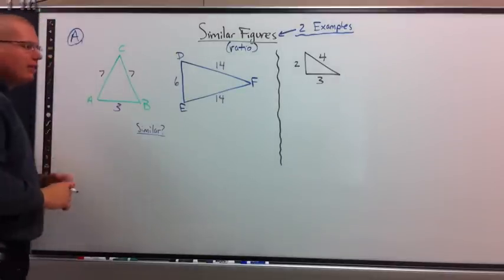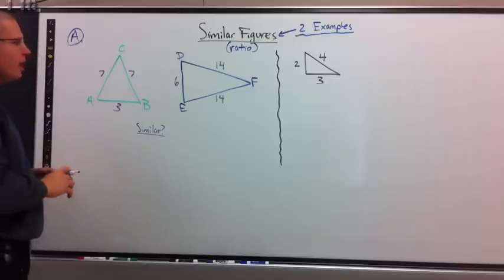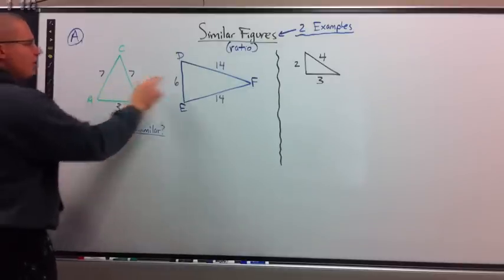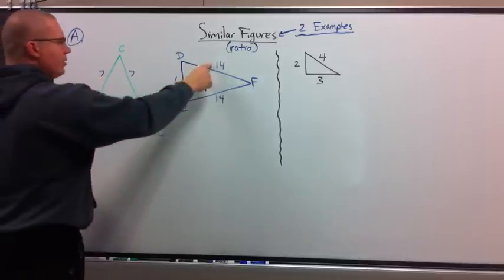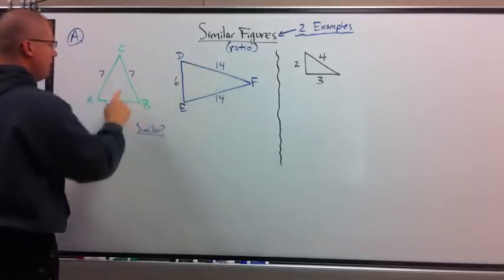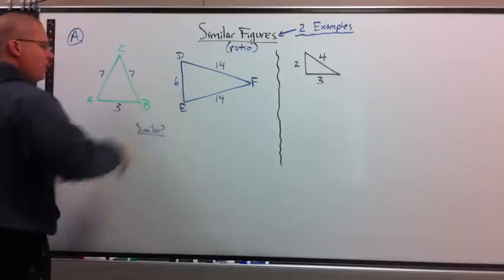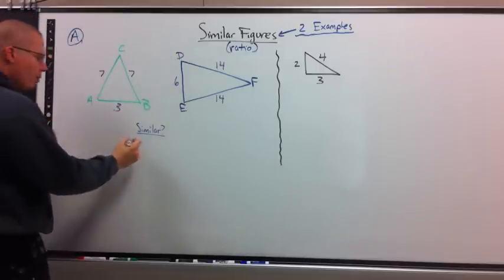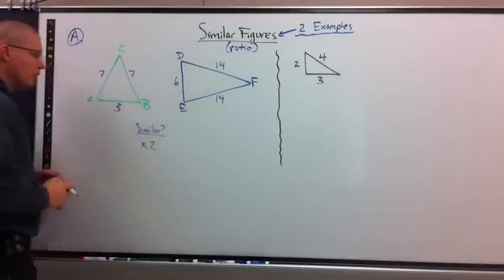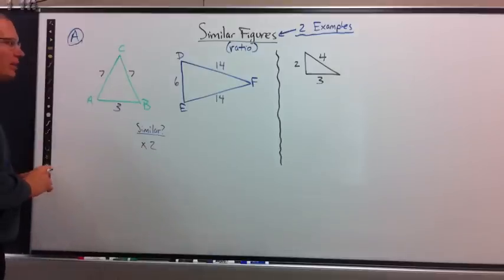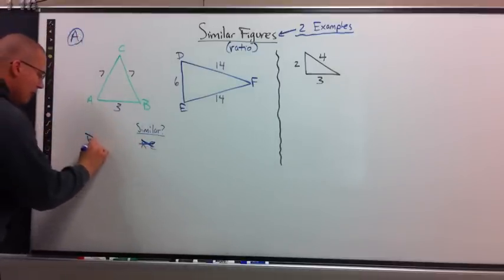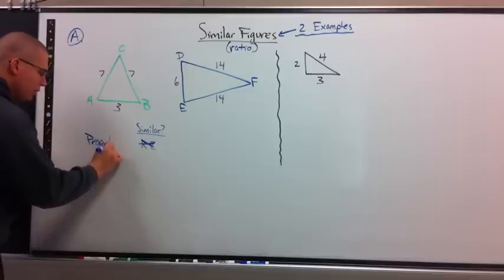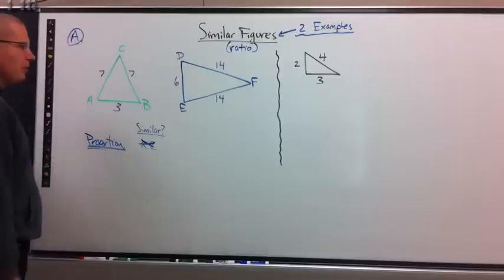Now what a lot of kids do, and this happens every time this comes across. Kids will look at this and say, oh this is similar to this. How do I know? Because I took this and timesed it by 2. 7 doubled is 14. 7 doubled is 14. 3 is doubled is 6. I'm done. And they write down, I times by 2. Yeah, this is right, the problem is this. The directions say, use a proportion. So kids never get their full credit because they simply write times by 2.